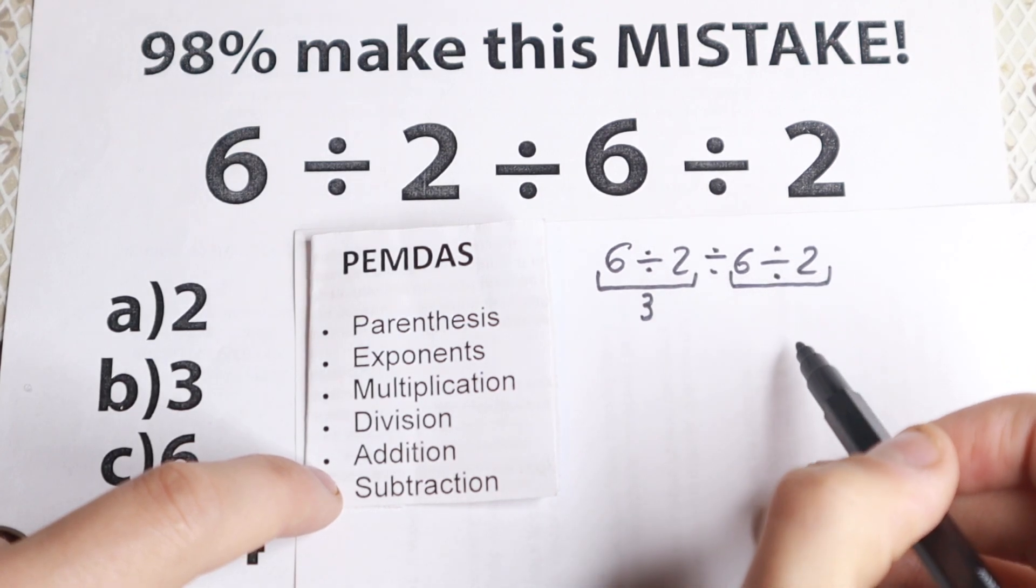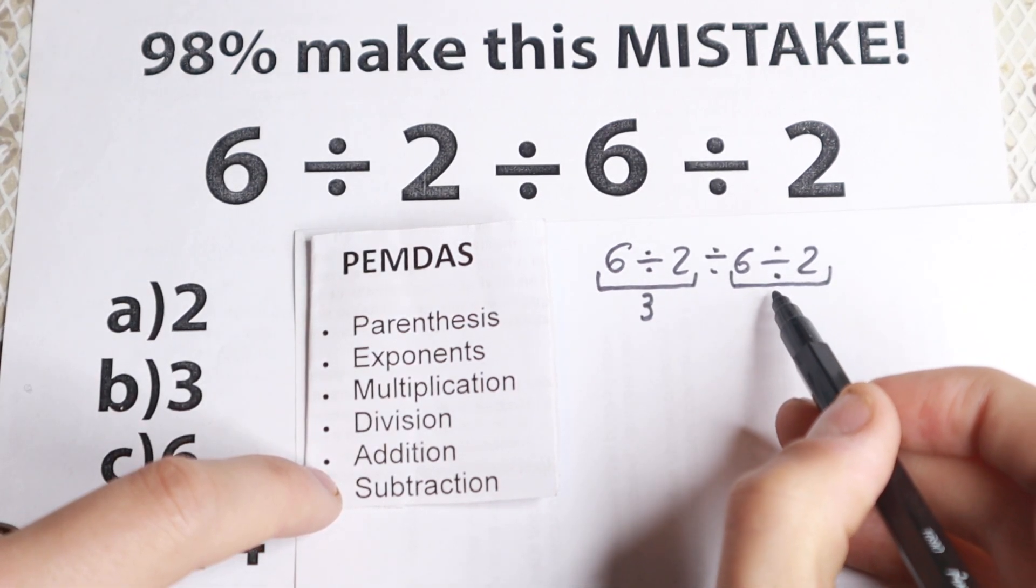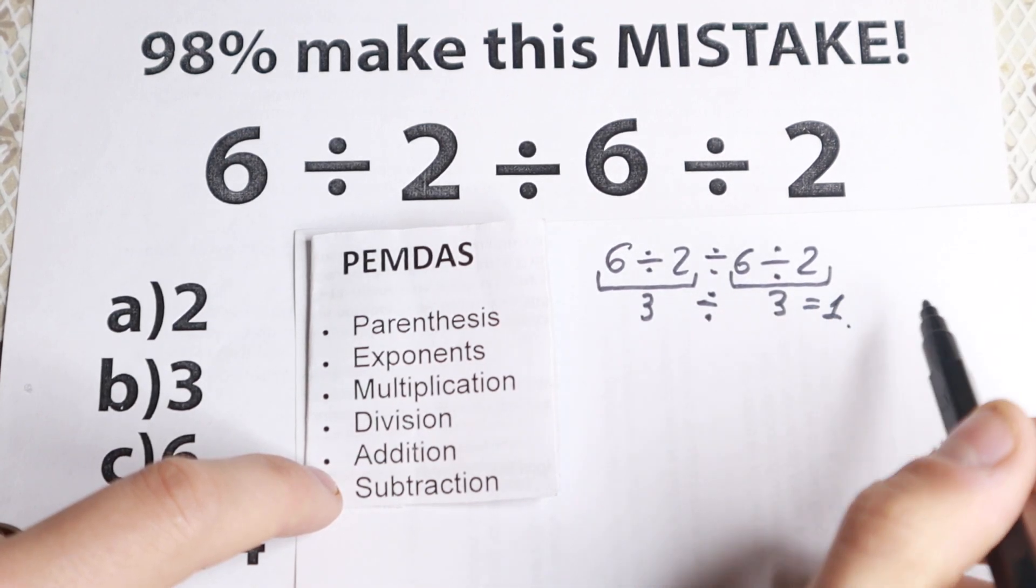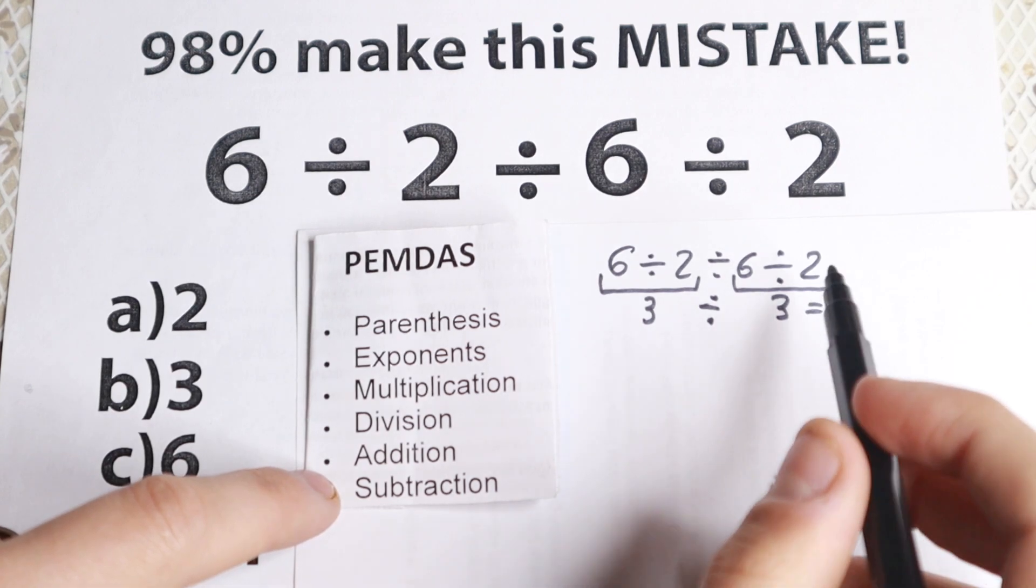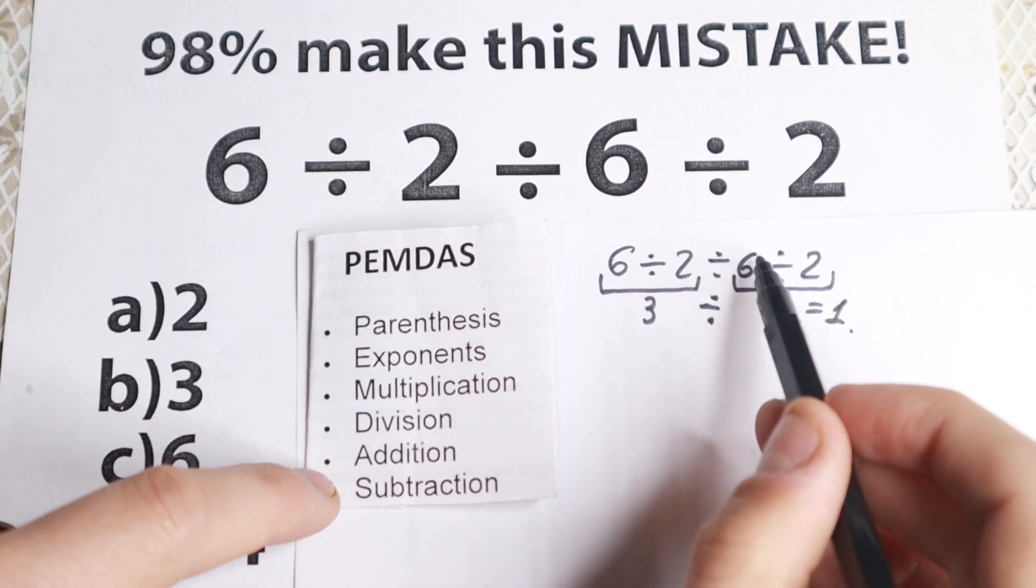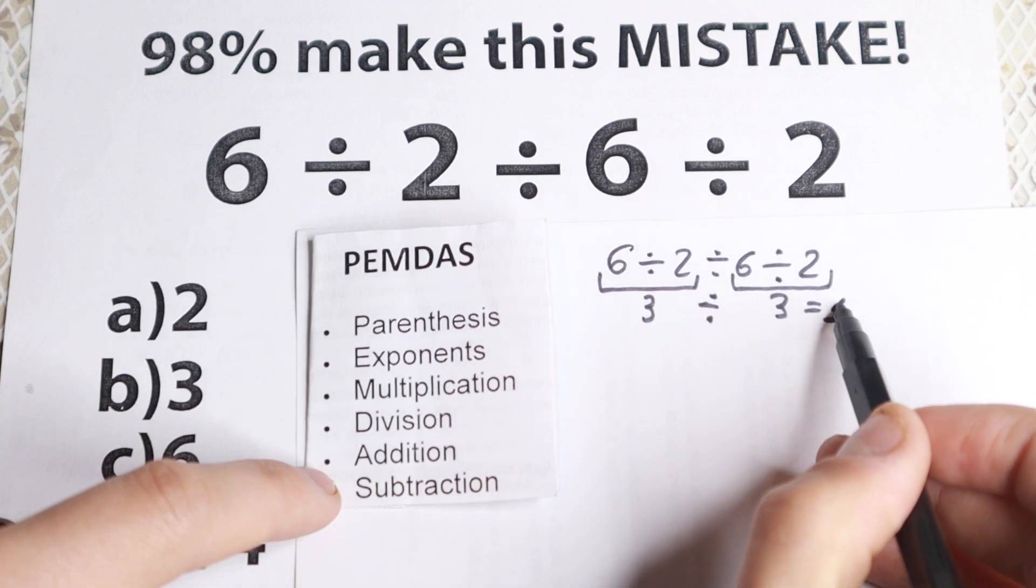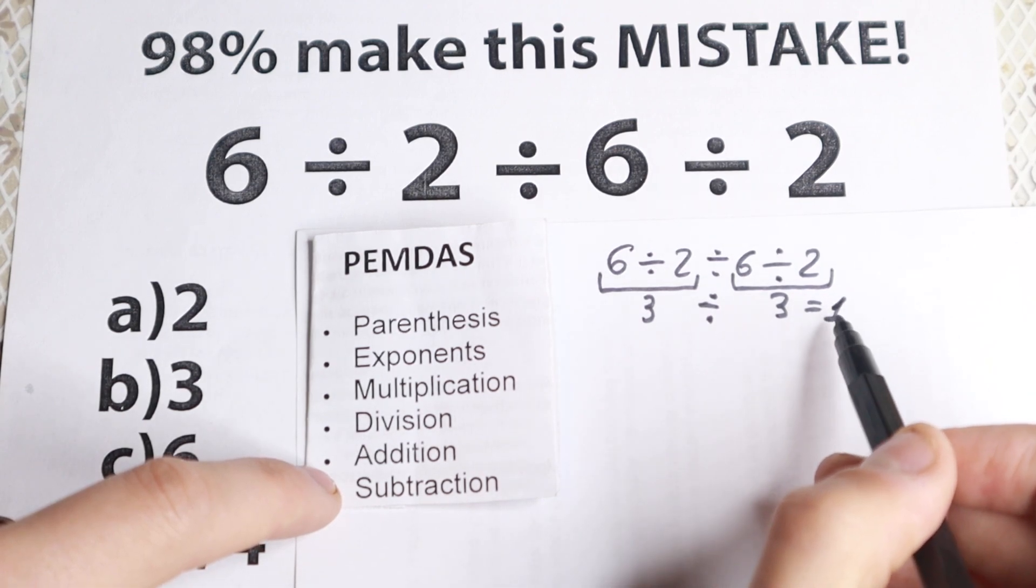So they divide right here 6 divided by 2. And right here they have like 3. Then 3 divided by 3 is equal to 1. And this is maybe the most common mistake I've ever seen. They divide like right here and right here. But a lot of students ask me, okay, this is equal to 1. But when is 1 the correct answer?